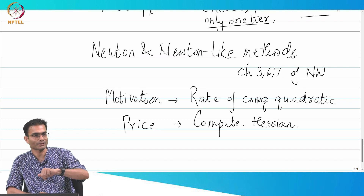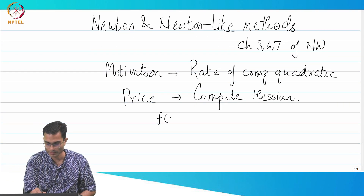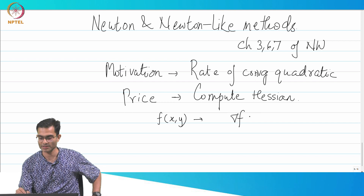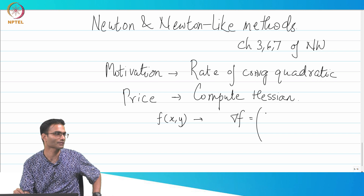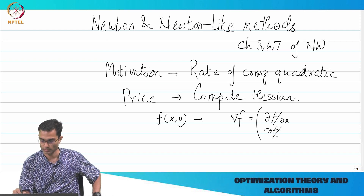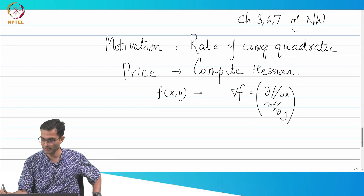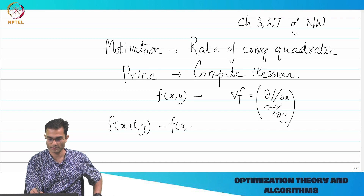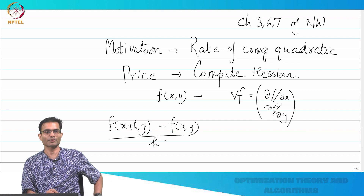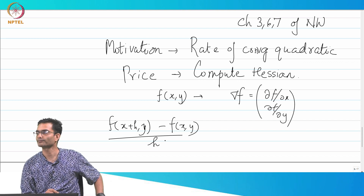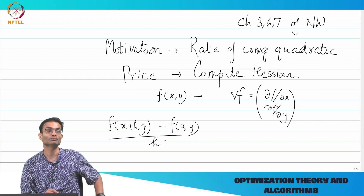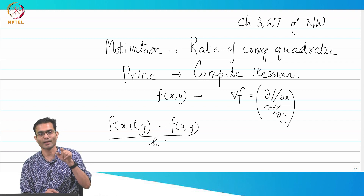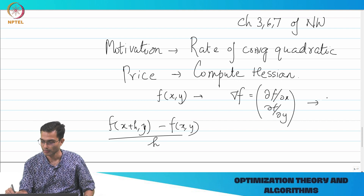Because you have to find the gradient of the gradient, in some sense. Take a function f(x, y). The gradient of f is: df/dx and df/dy. If we evaluate this by finite differences, the finite difference is simply f(x+h, y) minus f(x, y), divided by h. To calculate the gradient, we need at least three function evaluations: f(x+h, y), f(x, y+h), and f(x, y).